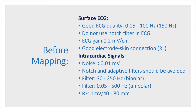We have to avoid using the notch filter. The ECG gain should be set to 0.2 mV per centimeter, which allows better analysis of P-wave morphology and polarity. Last but not least, good electrode-skin connection, especially at the right leg, is very important to have good ECG quality.